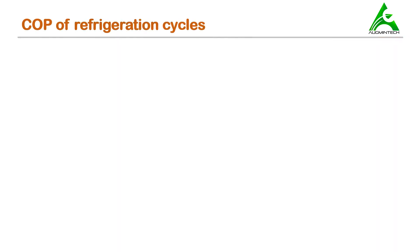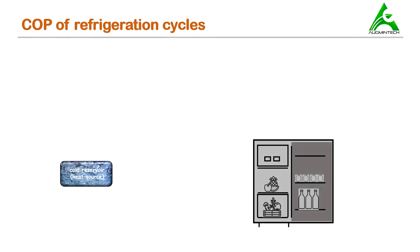COP of refrigeration cycles. To understand COP, first we need to understand a situation. In this situation, there is a cold reservoir which is the heat source. For example, let's consider the inside of a refrigerator — this can be considered as a cold reservoir. This needs to be maintained at a lower temperature than the surrounding. In order to do so, there has to be continuous removal of heat from this cold reservoir to the outer space, which is at a higher temperature. Because of the law of thermodynamics, heat cannot flow from a body at lower temperature to a body at higher temperature on its own. So there has to be a device used in order to achieve this non-spontaneous process. This device is called a refrigerator.